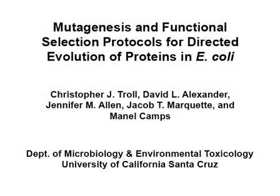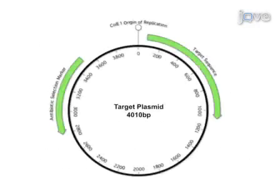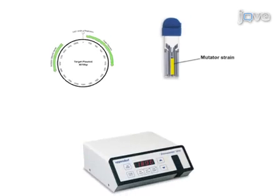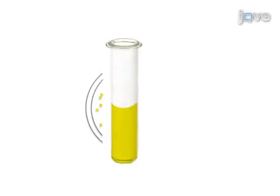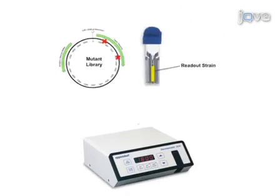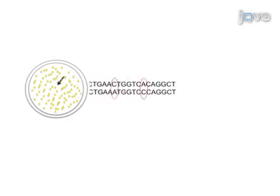The overall goal of this procedure is to create a random mutant library for a given target DNA sequence and to rapidly identify and characterize mutants using semi-quantitative functional selection. This is accomplished by first transforming a plasmid with a Coley-1 origin of replication containing the target sequence into the mutator strain. After plating and incubating the cells overnight, they are harvested and the target plasmid is isolated to obtain the mutant library. The mutant library is then transformed into a readout strain to characterize the mutations.